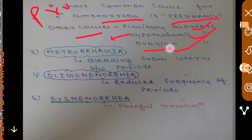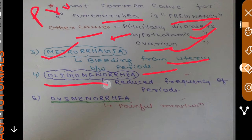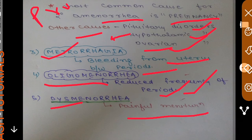The next condition is metrorrhagia, which is bleeding from the uterus between periods. Oligomenorrhea — oligo means reduced — refers to a reduced frequency of periods. Dysmenorrhea means painful menstruation, as 'dys' relates to pain and 'menorrhea' refers to menstruation.